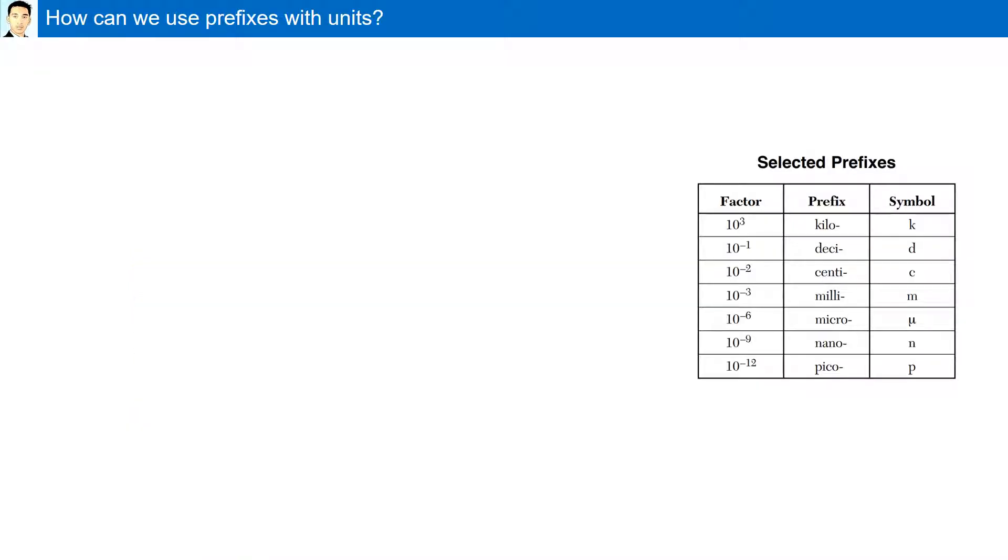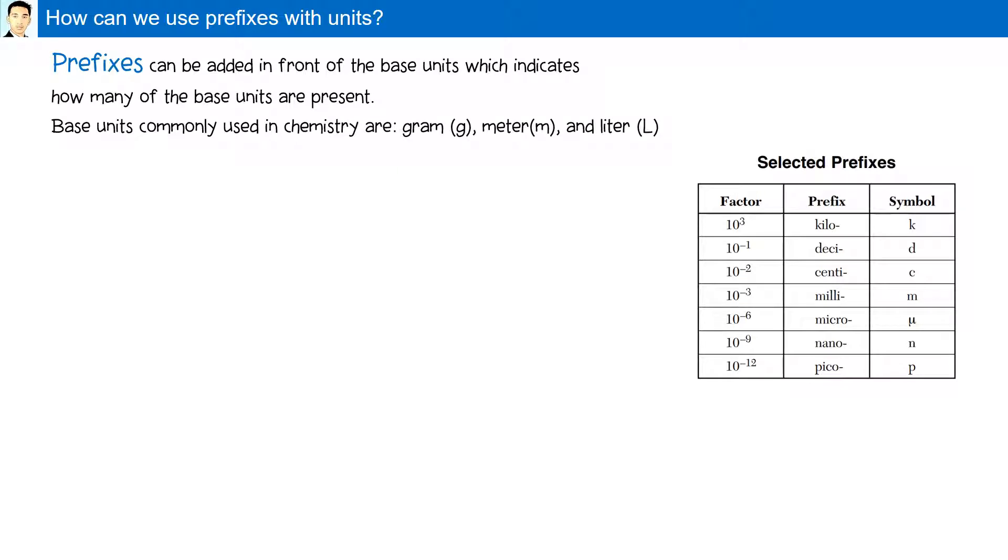How can we use prefixes with units? Prefixes can be added in front of the base units which indicate how many base units are present. Base units commonly used in chemistry are gram, meter, and liter.